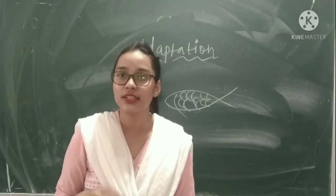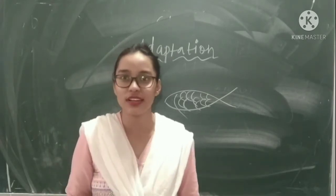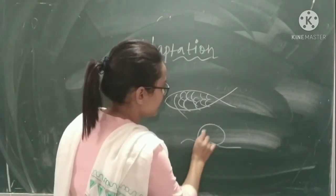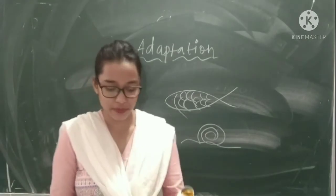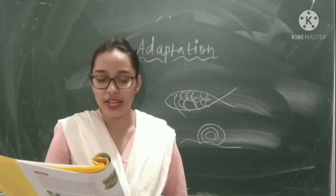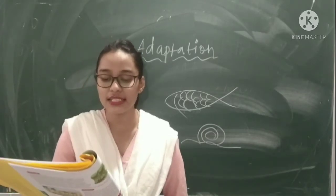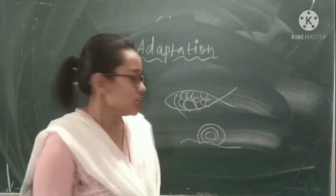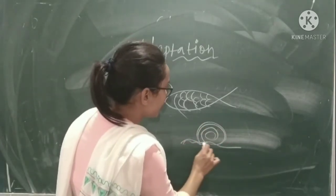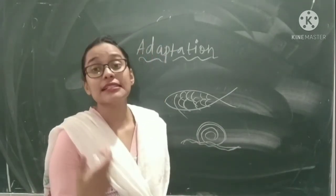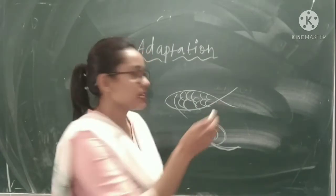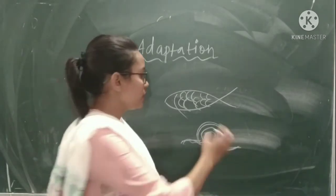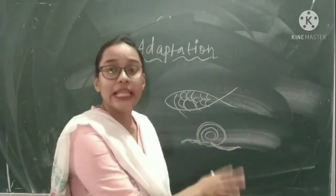Shell: you may have seen snails, especially in the rainy season — a cover-like structure is present over their body, which is called a shell. Shells protect the soft bodies of animals such as turtle, tortoise, and snail from damage. The hard shell also protects them from being eaten by predators — as soon as they sense danger, they put their body inside the shell.